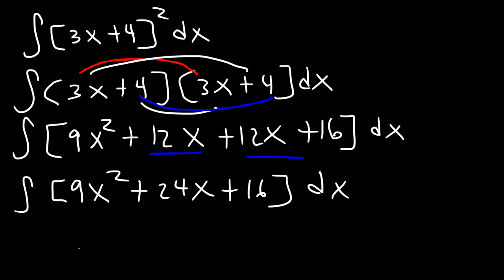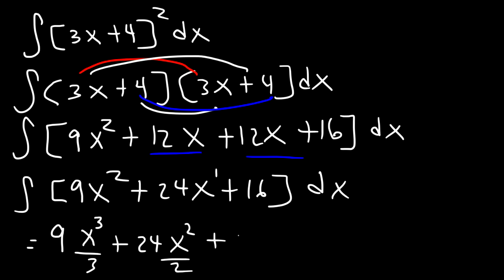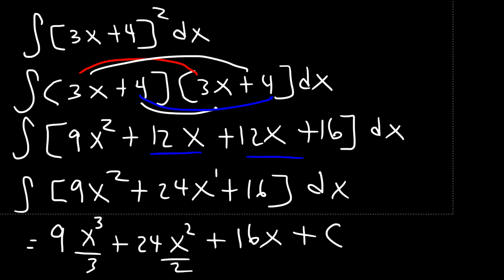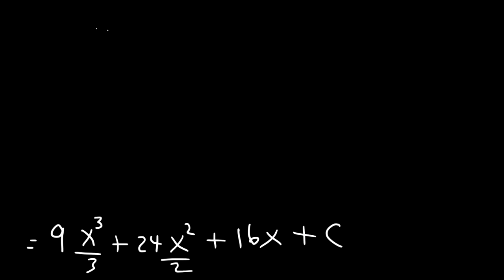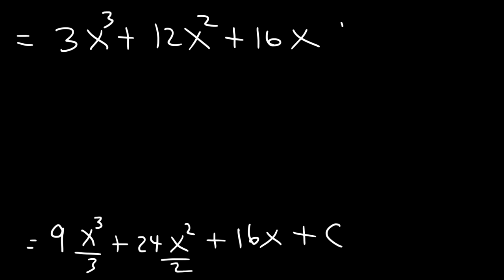Now we can find the antiderivative. For x squared it's x cubed over 3, for x to the first power it becomes x squared over 2, and the antiderivative of 16 is just 16x. Don't forget to add c, the constant of integration. Simplifying: 9 divided by 3 is 3, 24 divided by 2 is 12. So the final answer is 3x cubed plus 12x squared plus 16x plus c.